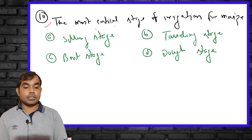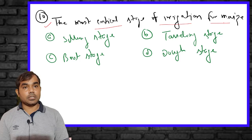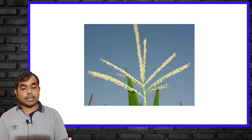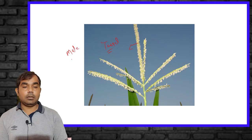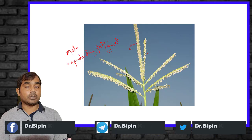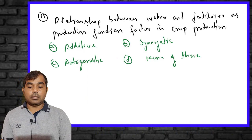The tenth MCQ asks: what is the most critical stage for irrigation of maize — silking stage, booting stage, tasseling stage, or end-of-stage? The right answer is the tasseling stage. The tassel is the male reproductive part of maize. When tasseling starts, water must be applied, as maize should not face water scarcity at this stage.